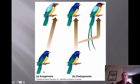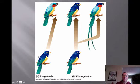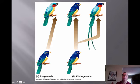On the left you've got anagenesis, and on the right you have cladogenesis. Anagenesis is where you have an original species that disappears but gets replaced by a completely different species that evolved from it. Basically, the original completely changed into a new species, and the original one is no longer there.